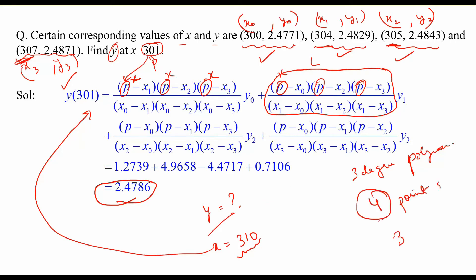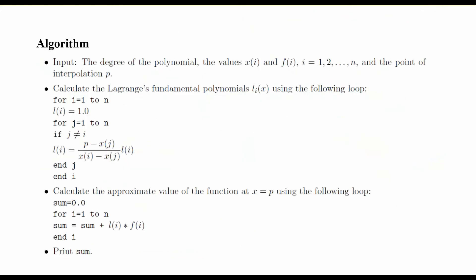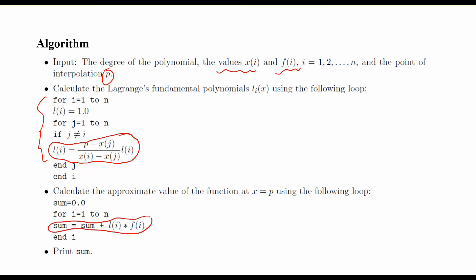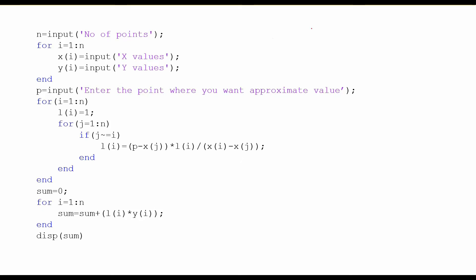Now let us look at the algorithm for Lagrange interpolation, and then we will see the MATLAB code. In this algorithm, we need the initial values of xi's and yi's, and an interpolation point where we want to find the value of f not given in the data. Using these, we first find out the Lagrange basis L values and then sum them up, multiplied by the yi's, to find the value of y at the unknown point p using the Lagrange interpolation formula.